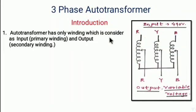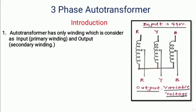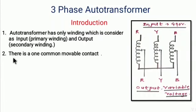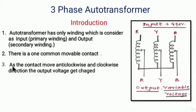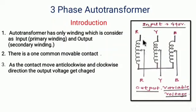An autotransformer has only one winding, which is considered as both input and output. See here — this is the winding which is considered for input as well as output. Next, there is one common movable contact. This movable contact is used to vary the output voltage. As the contact moves in the clockwise or anticlockwise direction, the output voltage gets changed.